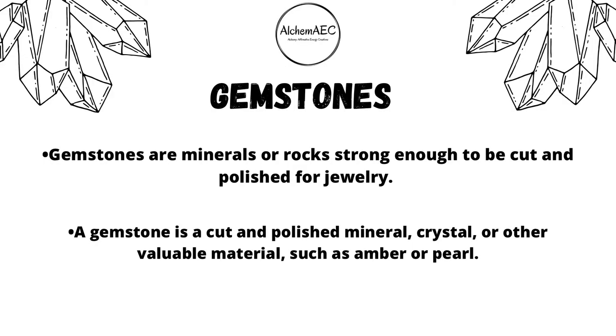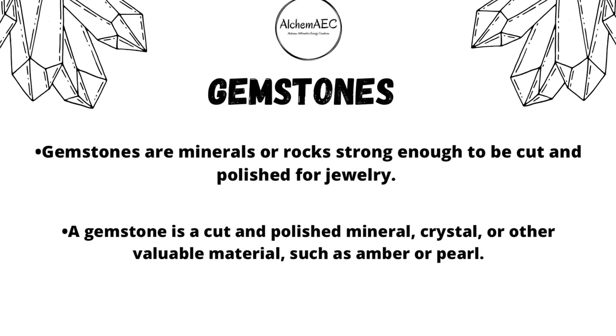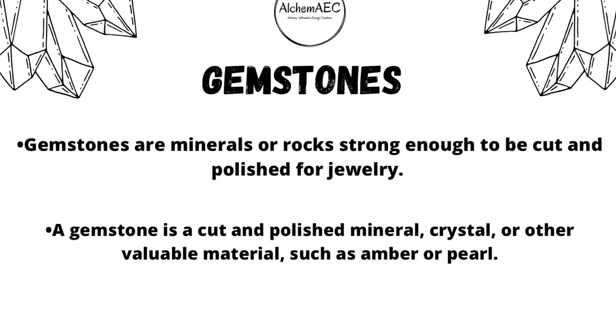Next, there are gems. Gemstones are minerals or rocks strong enough to be cut and polished for jewelry. A gemstone is a cut and polished mineral, crystal, or other valuable material such as amber or pearl. You see a lot of gemstones in jewelry such as rubies, emeralds, sapphires, diamonds, and topaz. Moonstone and lapidori are also gemstones.